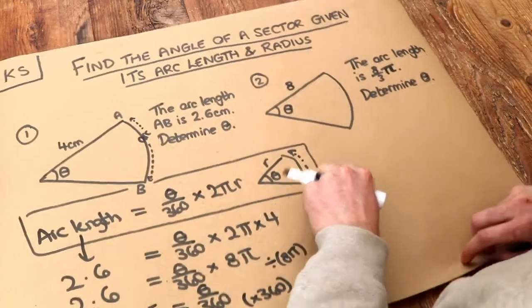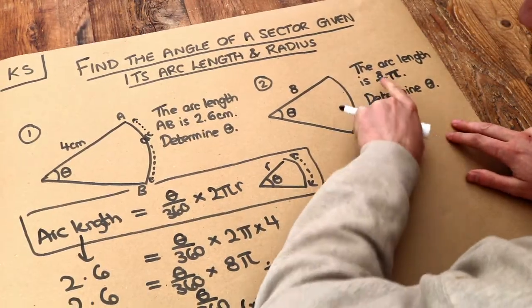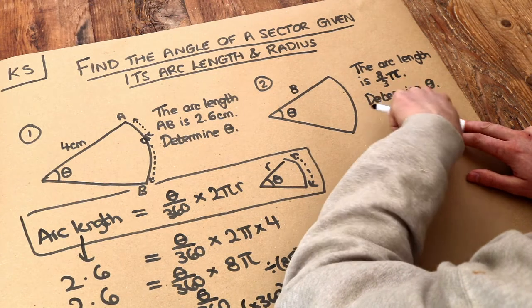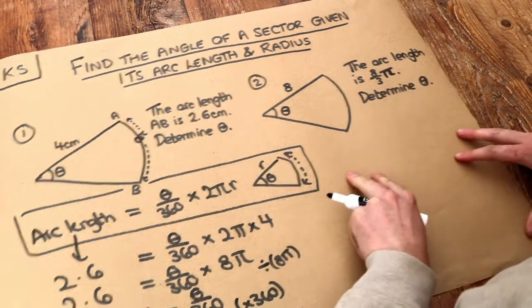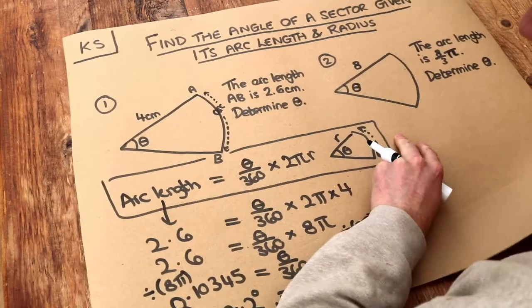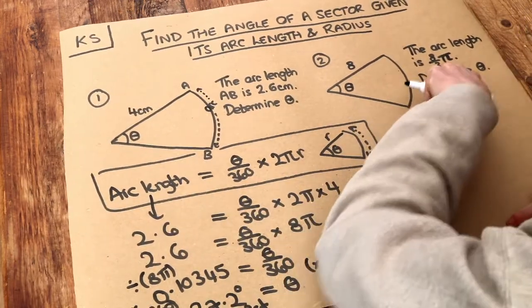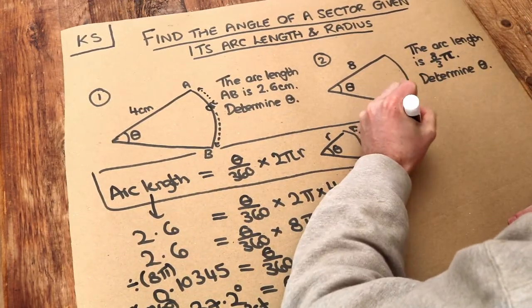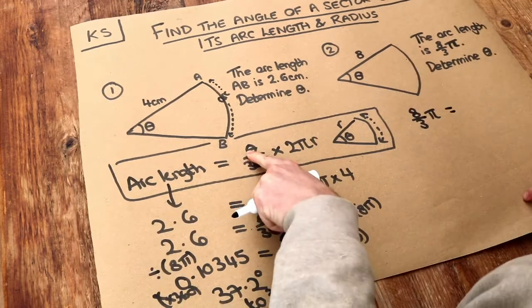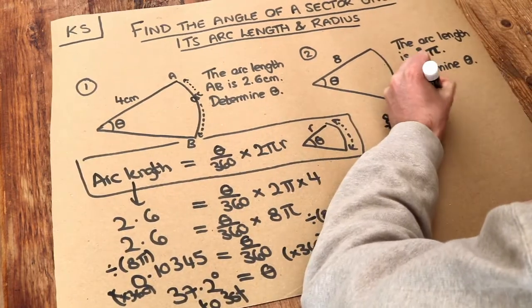Now let's do a second one of these, except sometimes they give you the arc length as some quantity of π. So it's a multiple of π, something π. But let's use exactly the same principle. The arc length, we're told, is 8/3π. So 8/3π is equal to θ/360. We don't know what θ is yet.